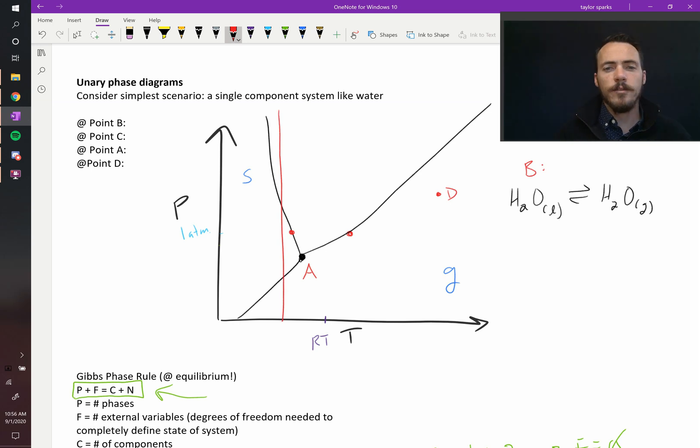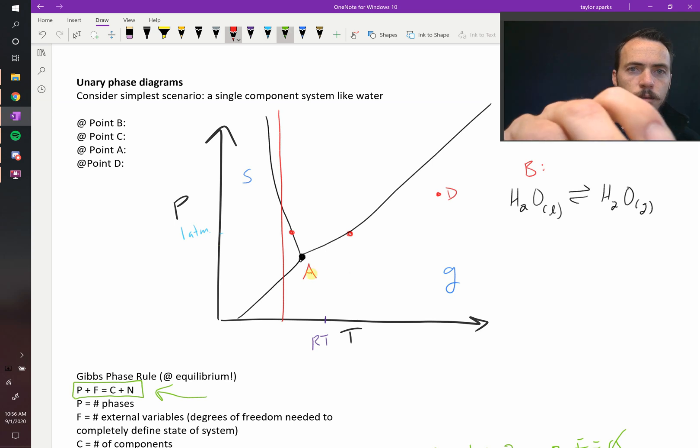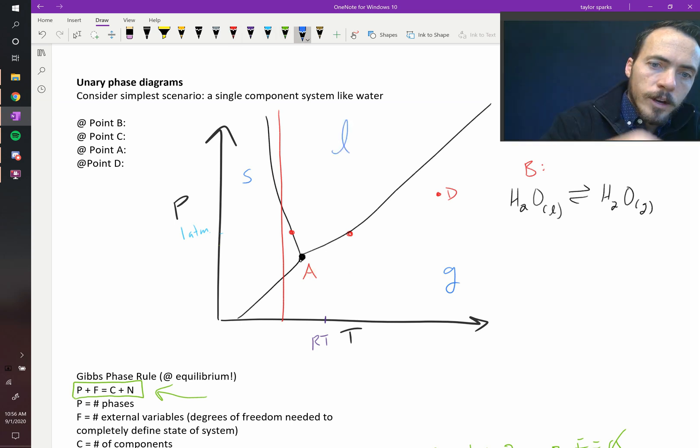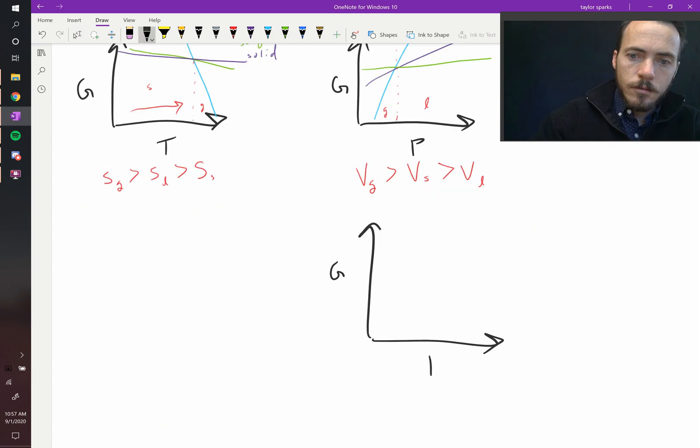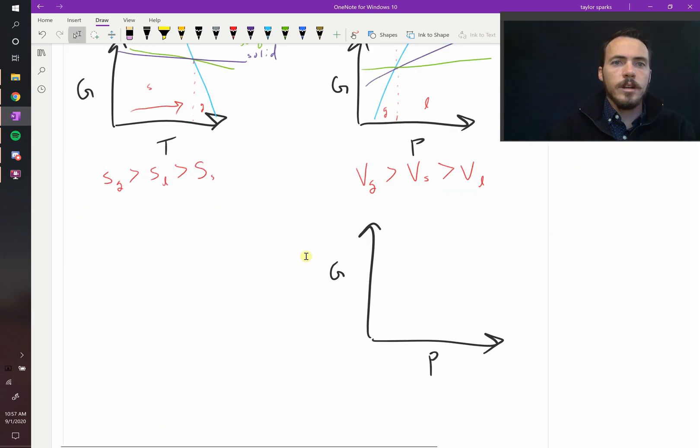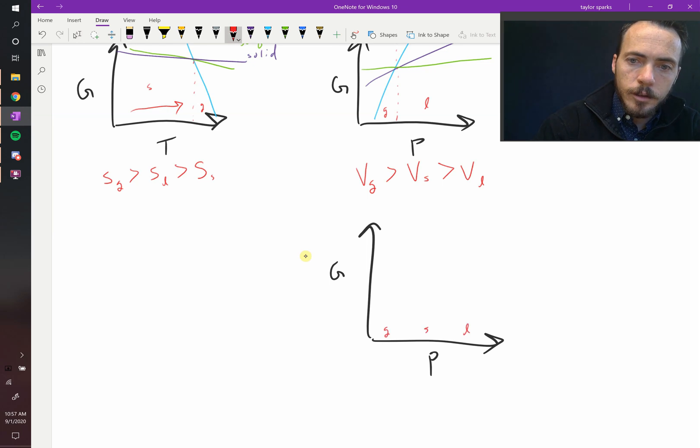Let's do it at this temperature. Could we sketch that for that temperature? We know that it needs to go from gas to solid to liquid. It needs to go—right down here it needs to be a gas, and then it needs to be solid, and then it needs to be liquid. So let's go ahead and sketch that. This is going to be a G versus P.